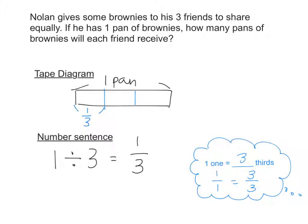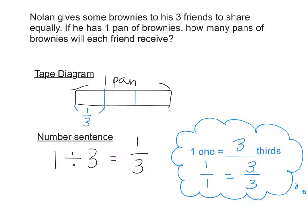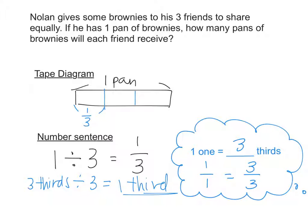We can also think that one third is the same as three thirds. So is one divided by three the same thing as three thirds divided by three? If I have three bananas and divide by three, everyone gets one banana. Three pans divided by three — one pan. Three books divided by three — one book. Three thirds divided by three — one third. Therefore it confirms that three thirds, which equals one, divided by three equals one third.